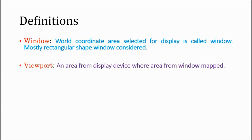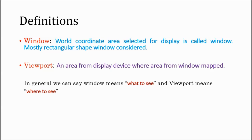Now, viewport. Whatever photograph we have taken, we are displaying it somewhere. An area on the display device where we are mapping the window — where we are putting the picture — is called a viewport. In general, we can say that window means what to see, and viewport means where to see. What is to be displayed is decided by the window, and where it will be displayed is decided by the viewport.